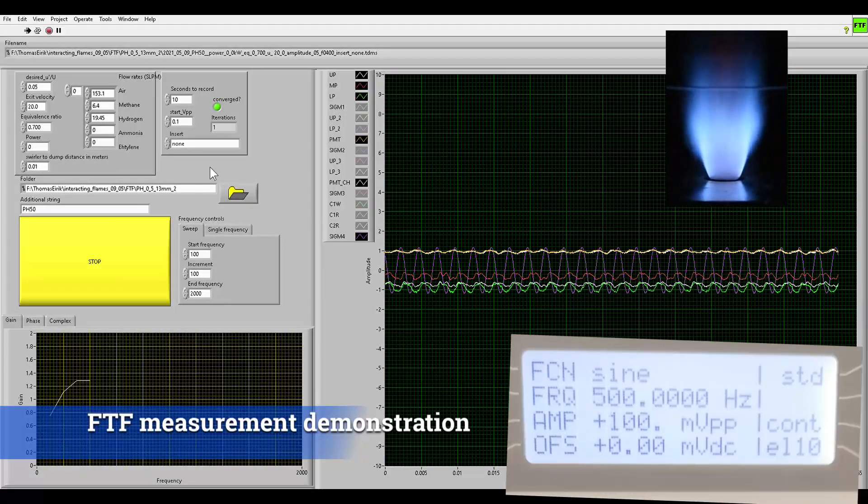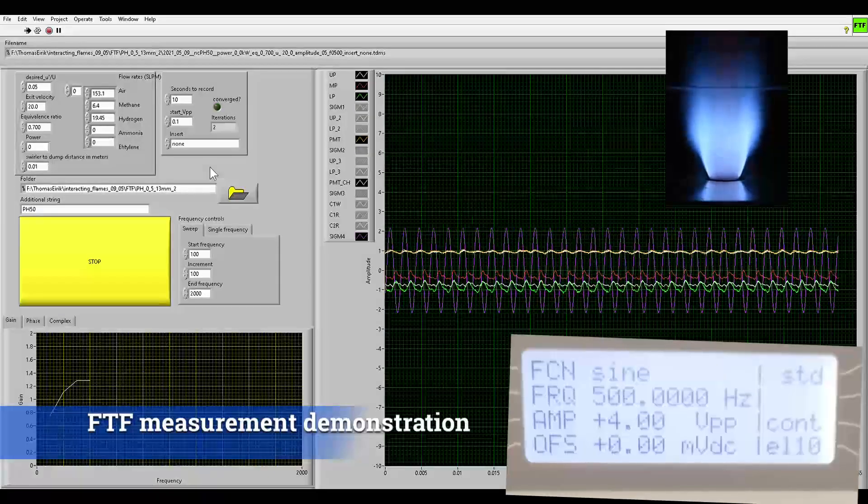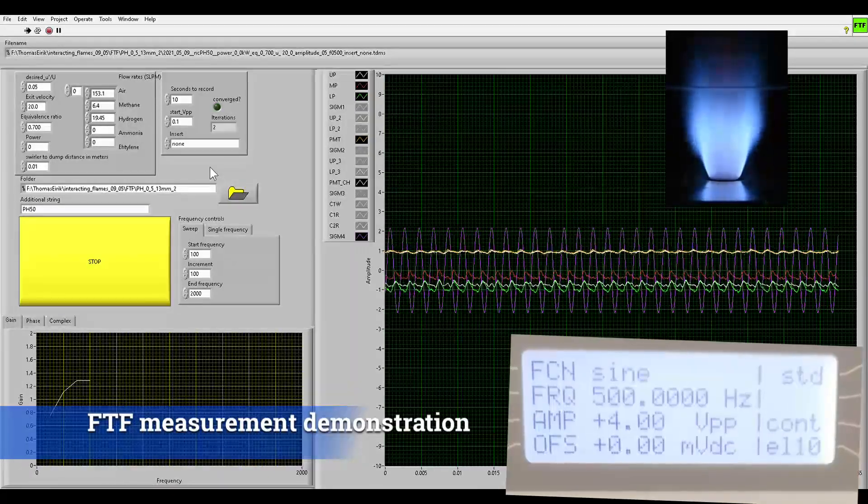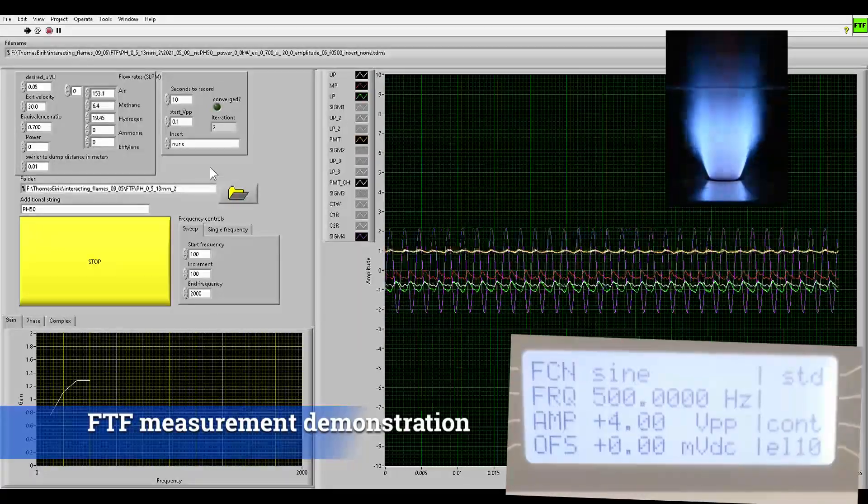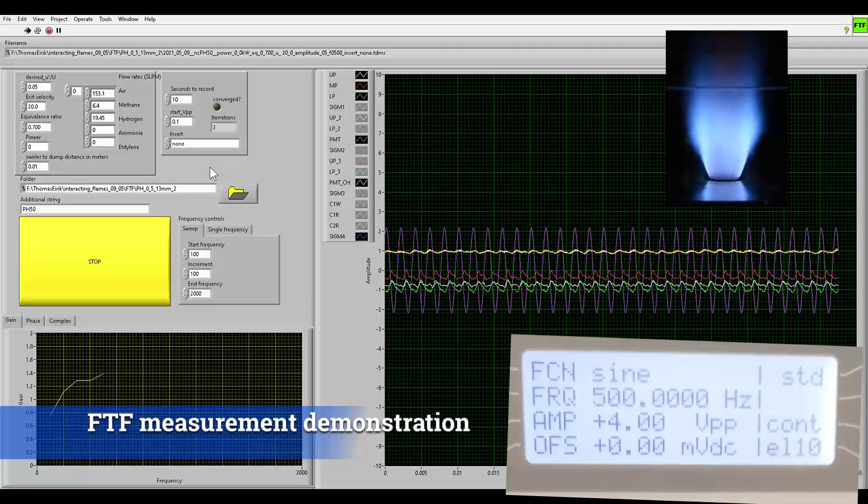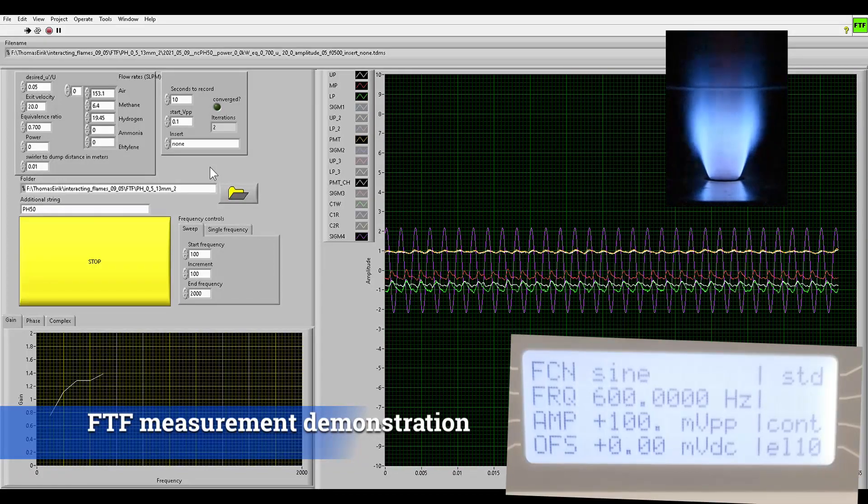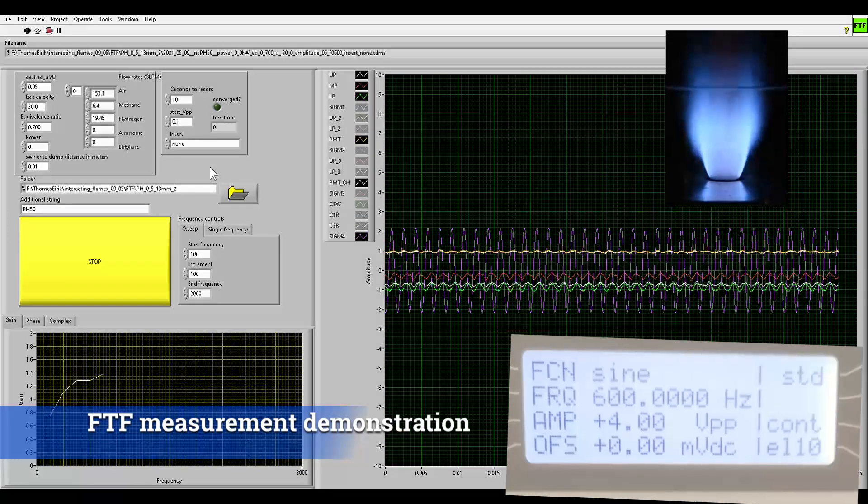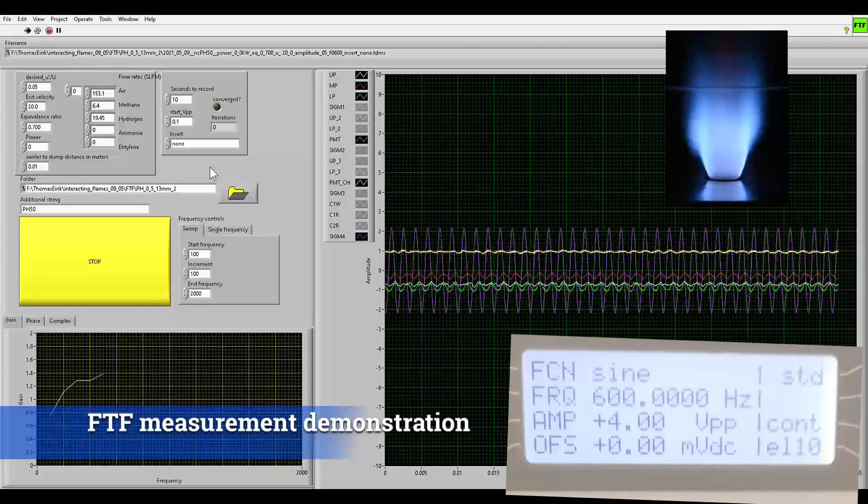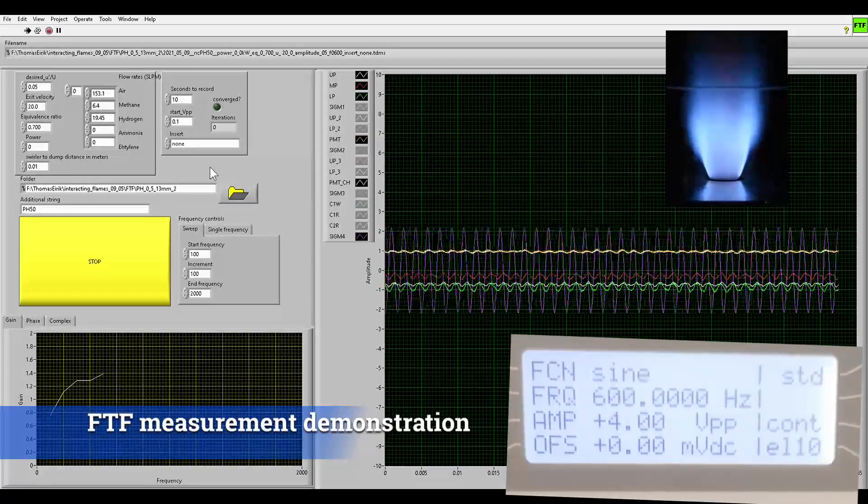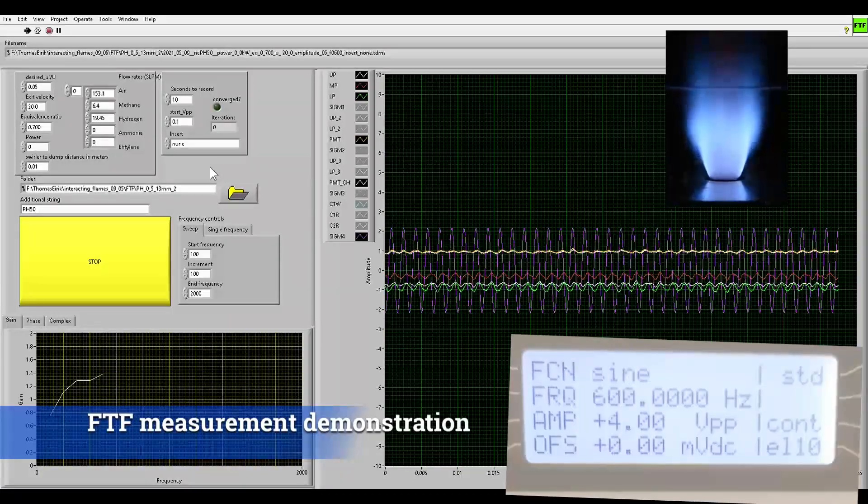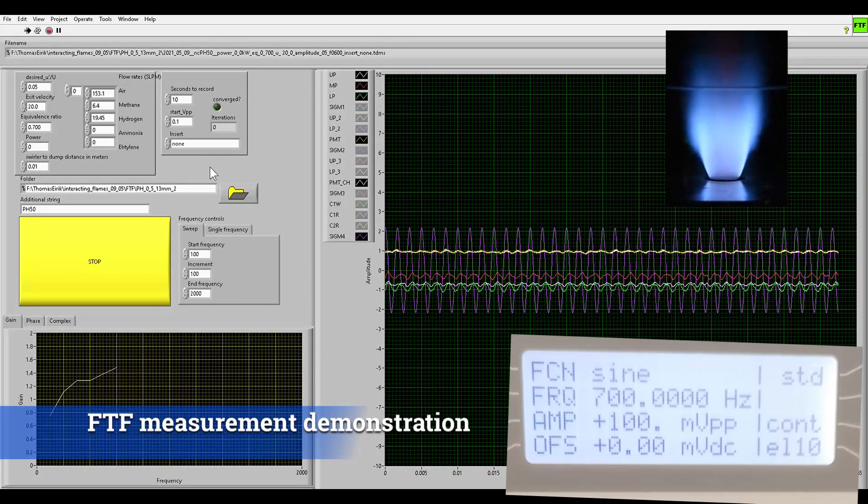It's important to keep the amplitude of the velocity fluctuations constant at the reference position. Be aware that this is not the same as keeping the pressure amplitude constant at the pressure sensors. The amplitude should ideally be low as the flame stability depends on the flame's response to small fluctuations in the absence of a large amplitude acoustic field. However, turbulent fluctuations create significant noise in the signals and the amplitude must be high enough to achieve a reasonable signal-to-noise ratio. Typical velocity fluctuation amplitudes are around 5% of the mean velocity. This is the amplitude used in this demonstration.